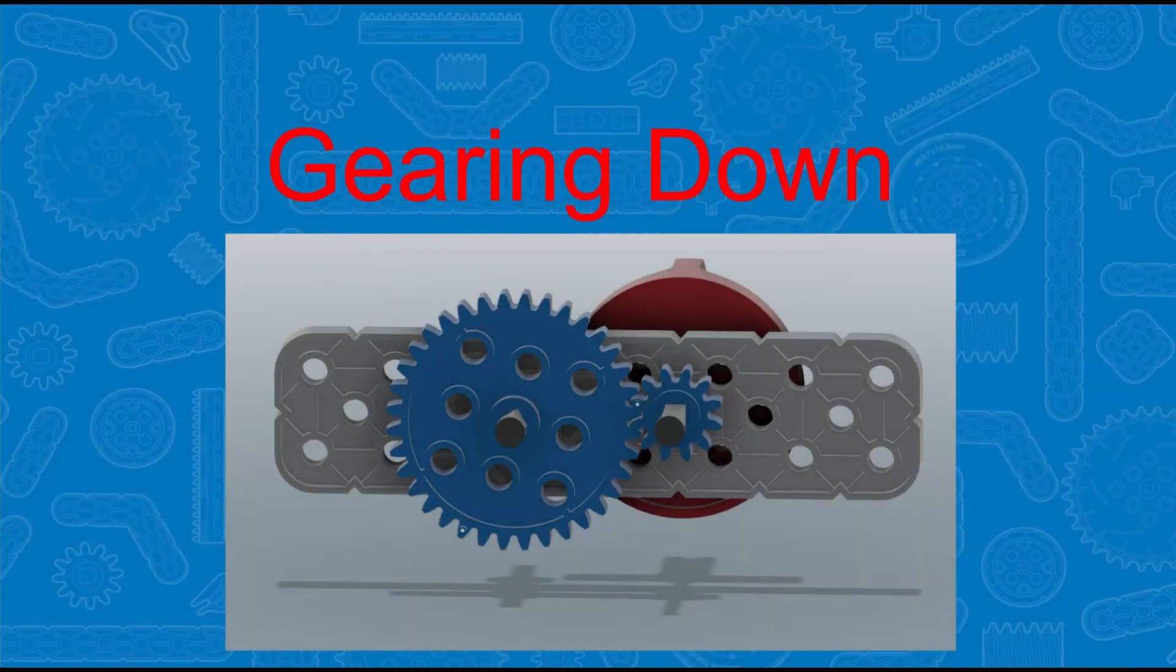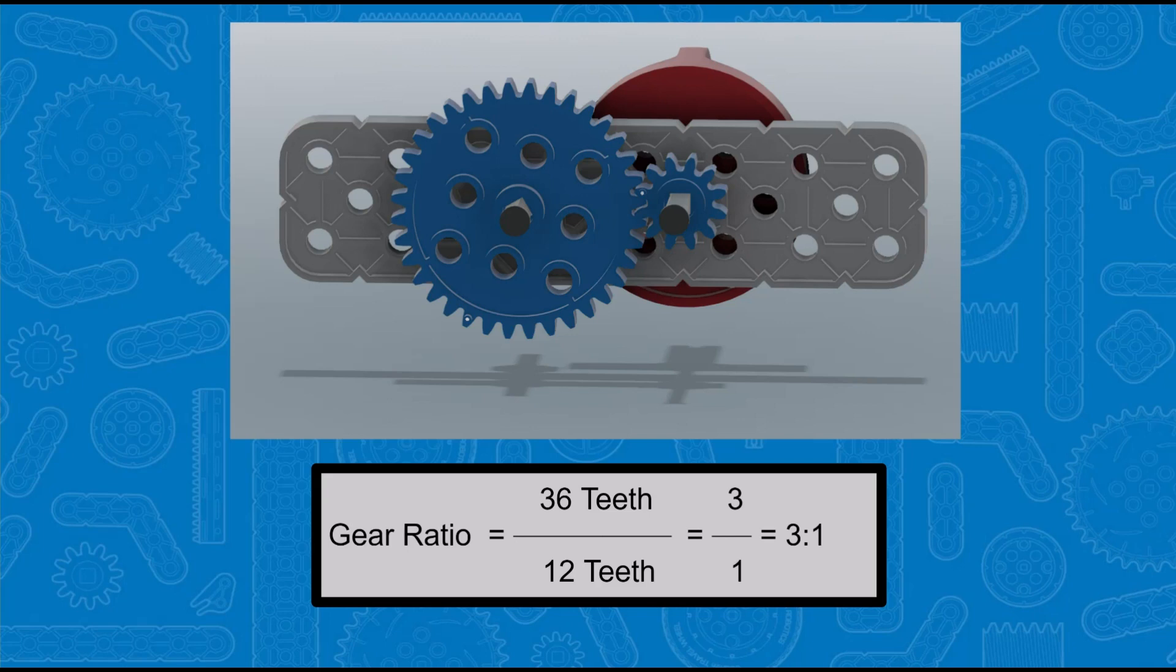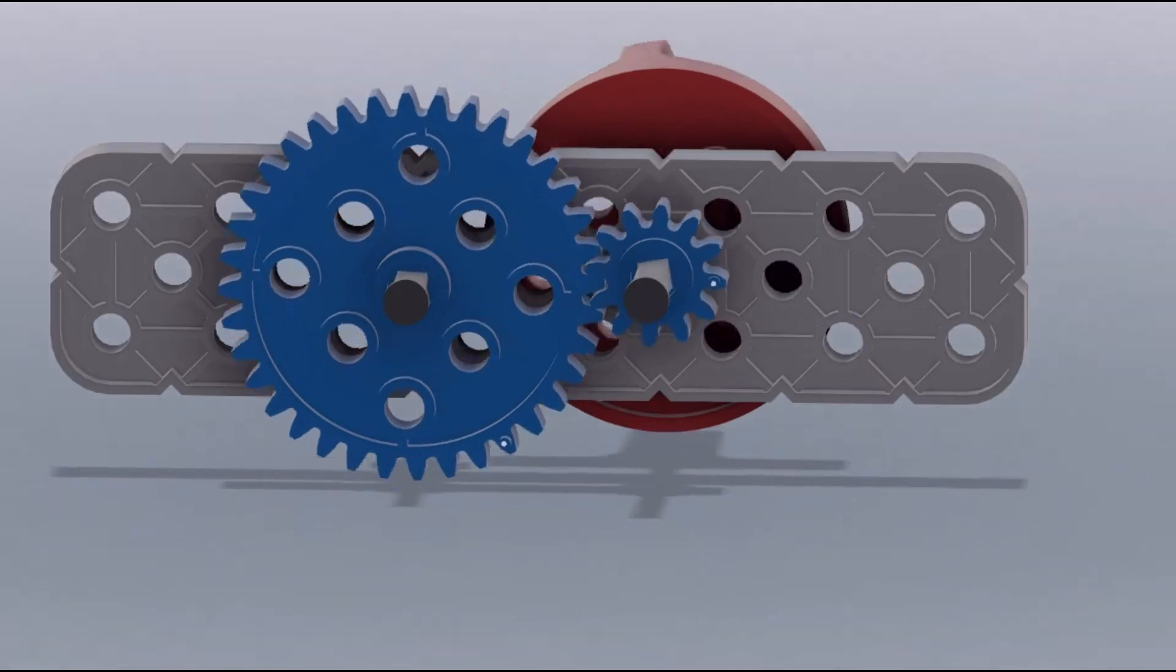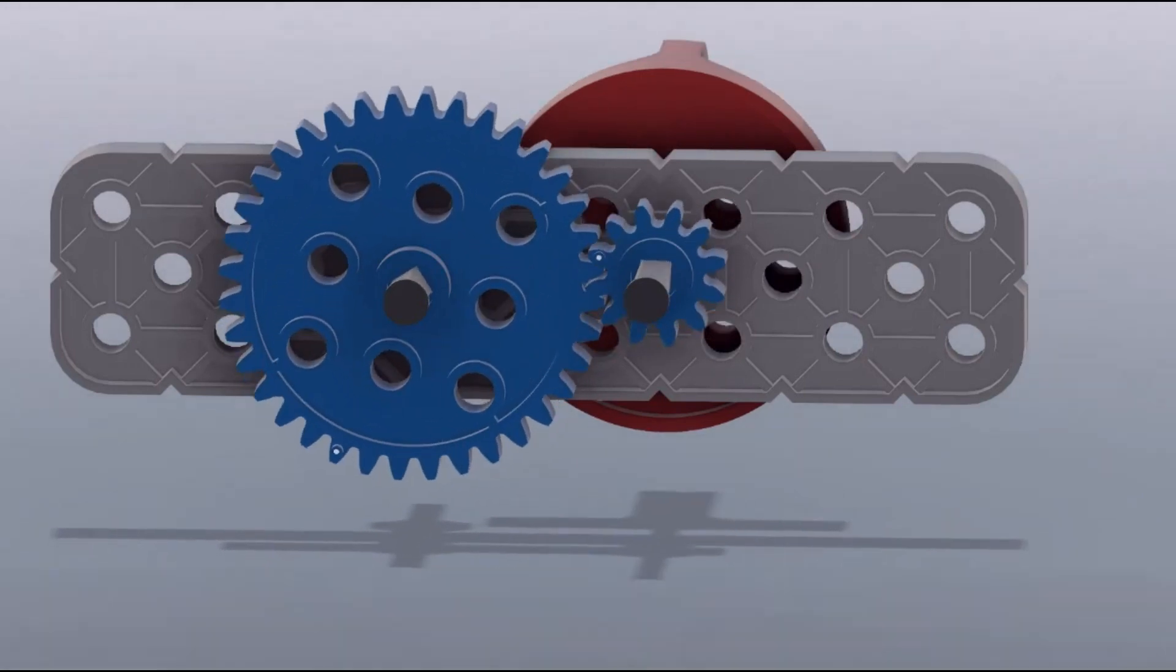The next example of gear ratio is gearing down. In this example, the driven gear has 36 teeth and the driving gear has 12 teeth. This gives us a gear ratio of 3 to 1. With this 3 to 1 gear ratio, the input gear needs to rotate three times in order for the output gear to rotate once. As you will see, the input gear rotates once, the output gear will only rotate one third the distance.